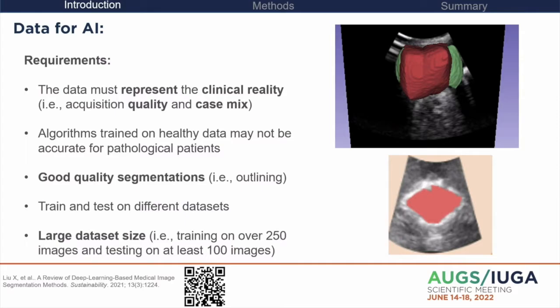Data is extremely important. If you want to do this in your clinic there are some things you need to know: the data must represent the clinical reality. You can't pretend every acquisition is high quality, so you need to make sure your training data has varied acquisition quality and a case mix of pathologies.